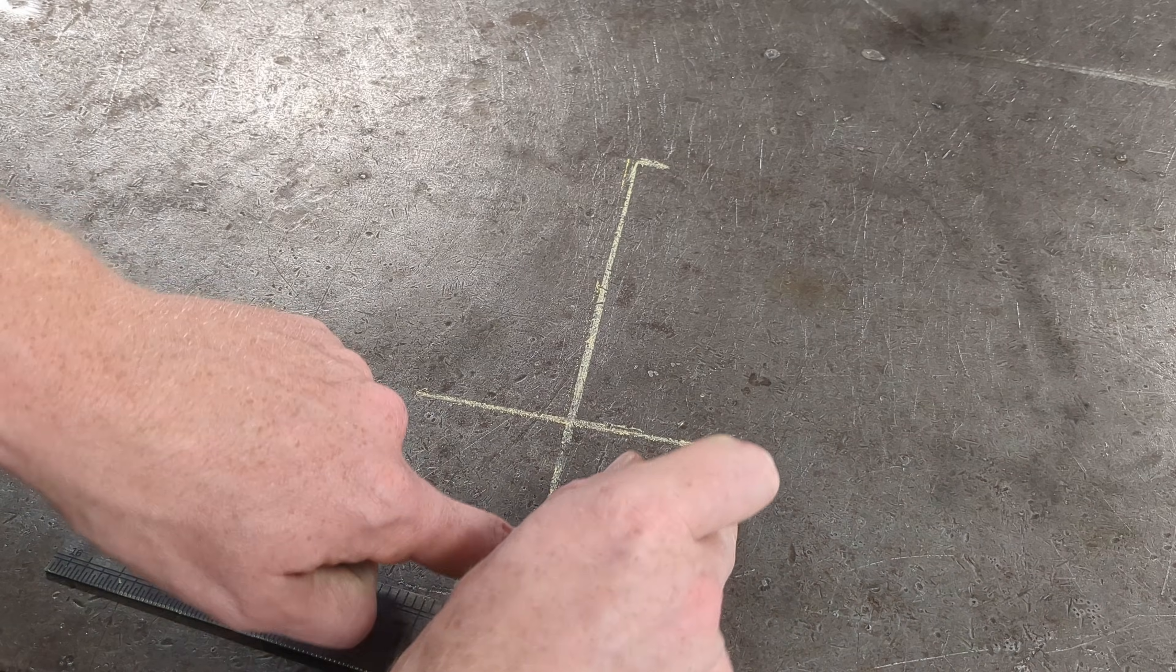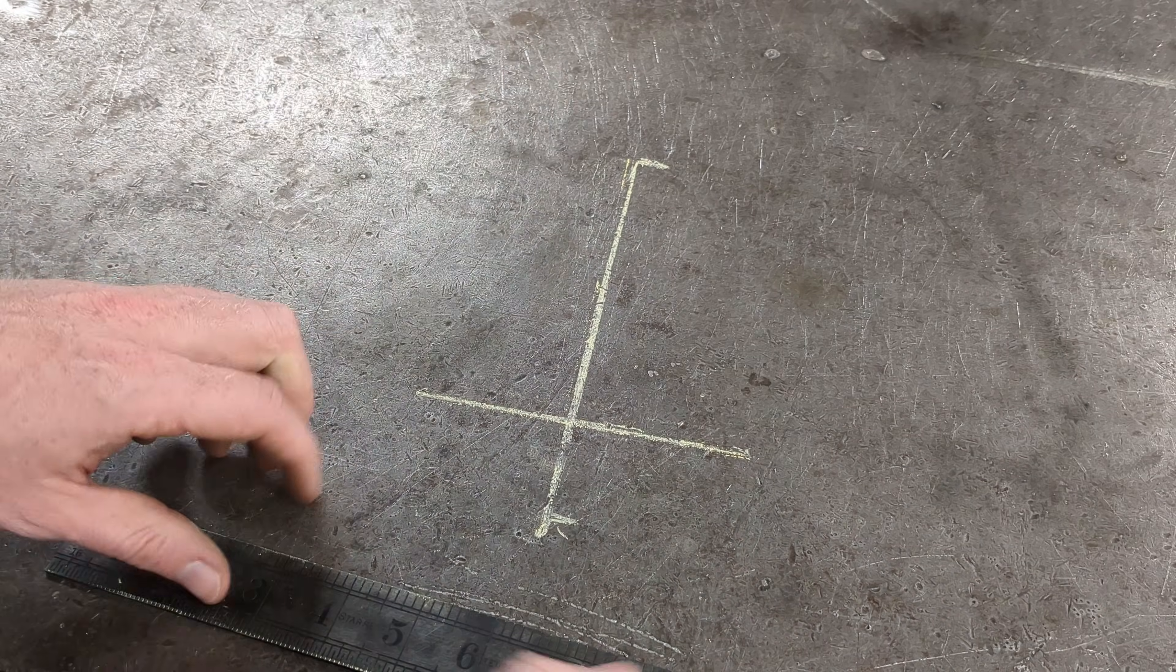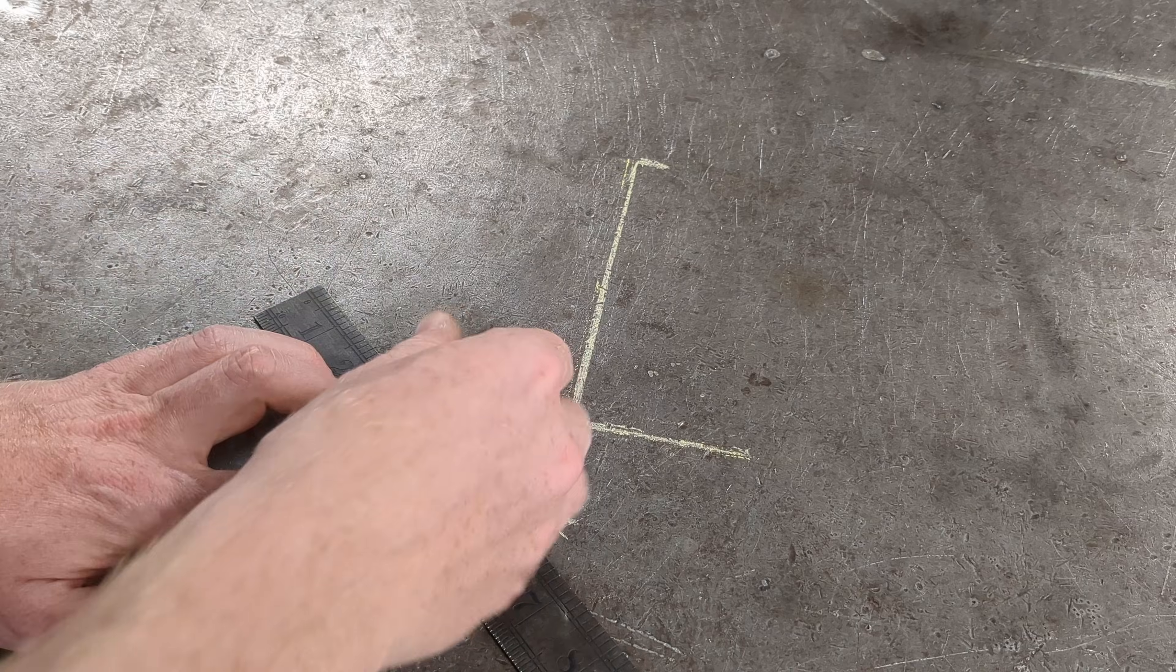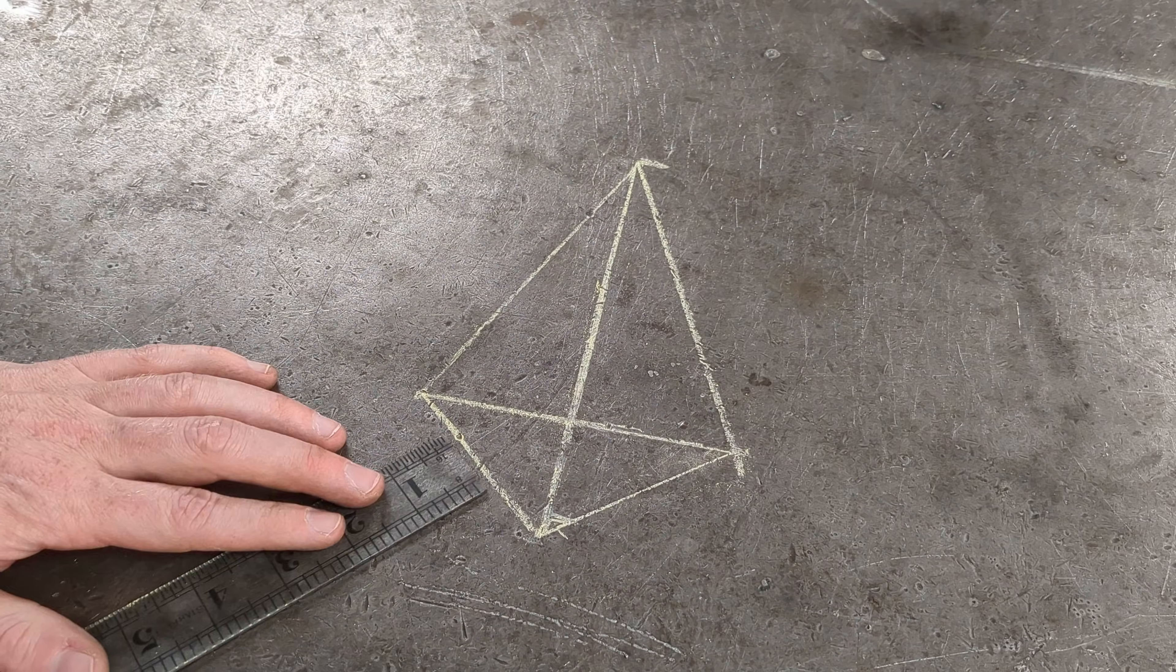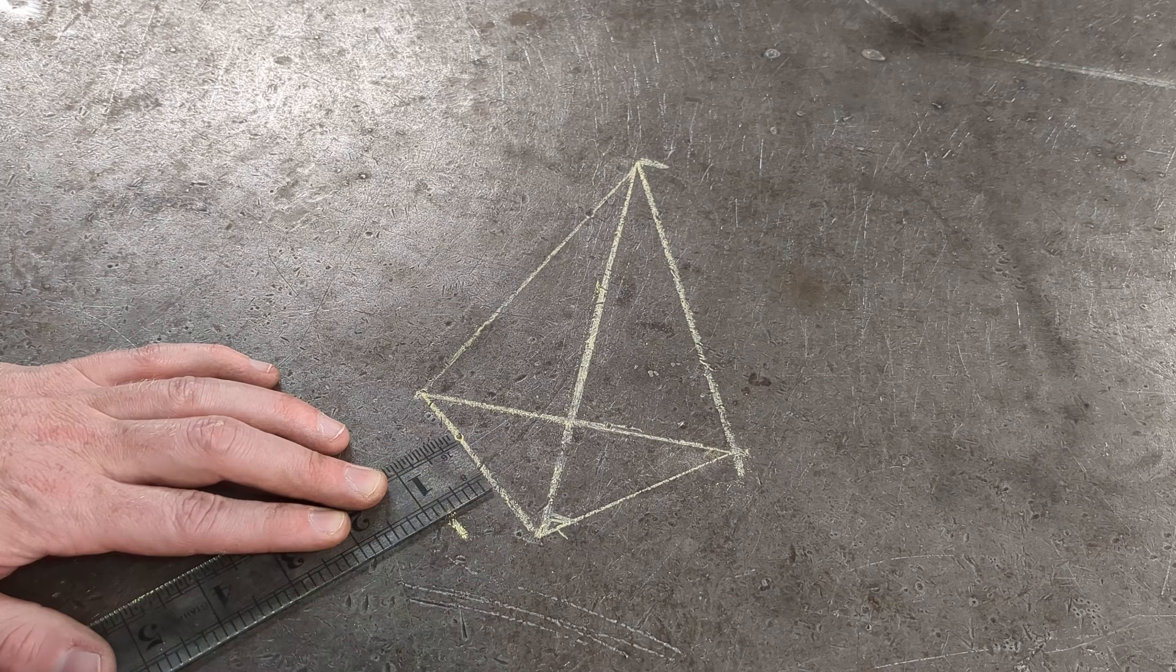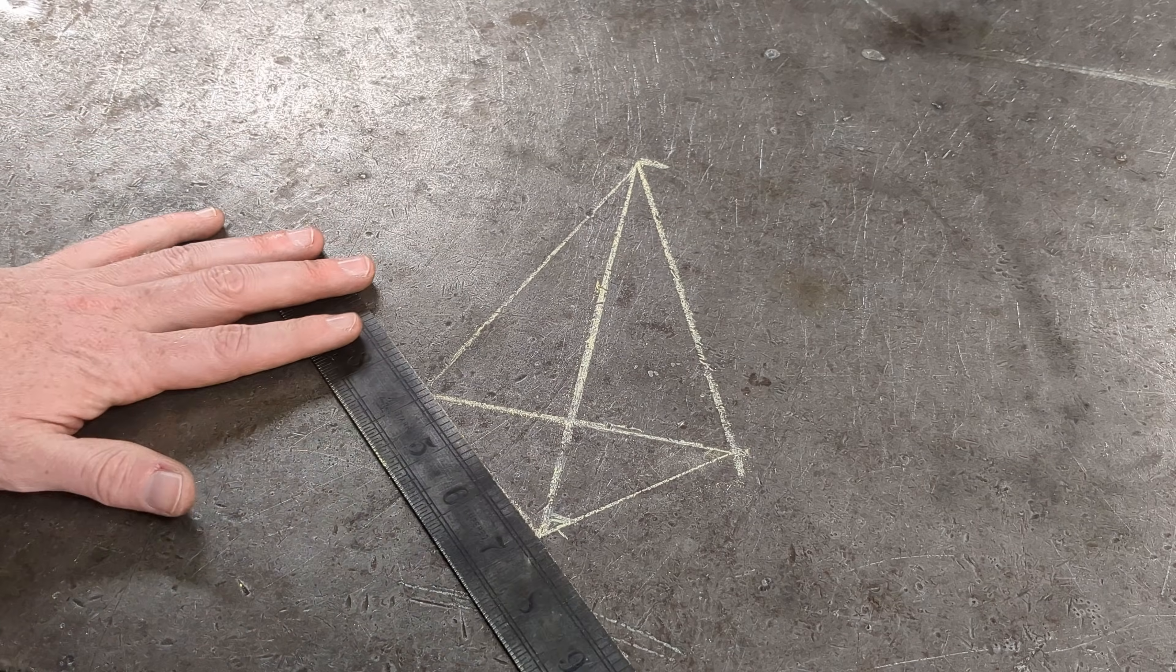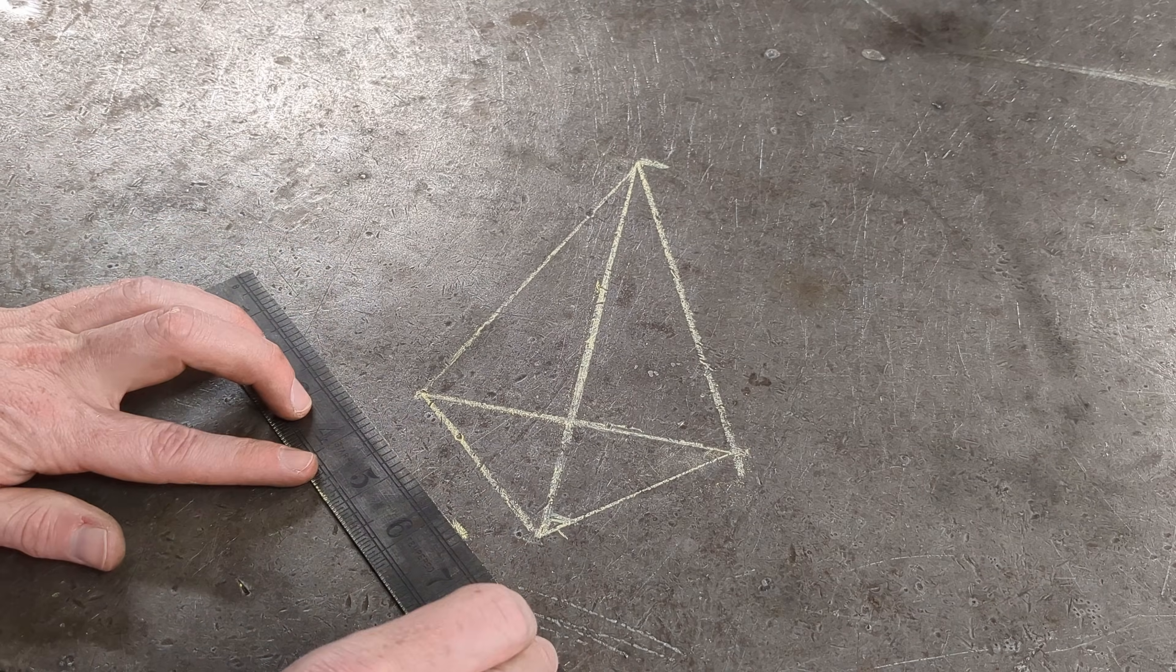To complete the diamond, just connect the endpoints of your lines. Your tab should be about half an inch to three quarters of an inch wide. Measure out from one of the short lines of your diamond and then mark a line parallel to that same line.